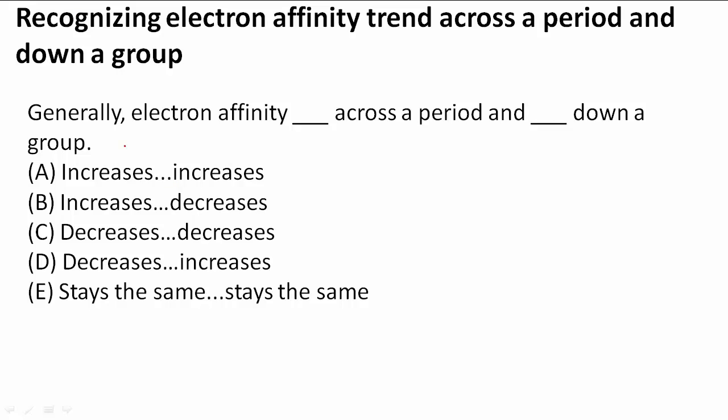In this example problem it says generally electron affinity blank across a period and blank down a group.